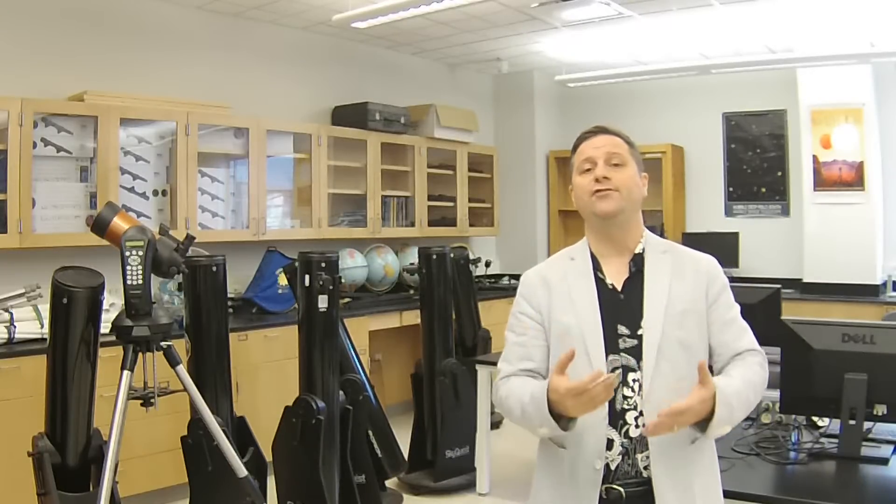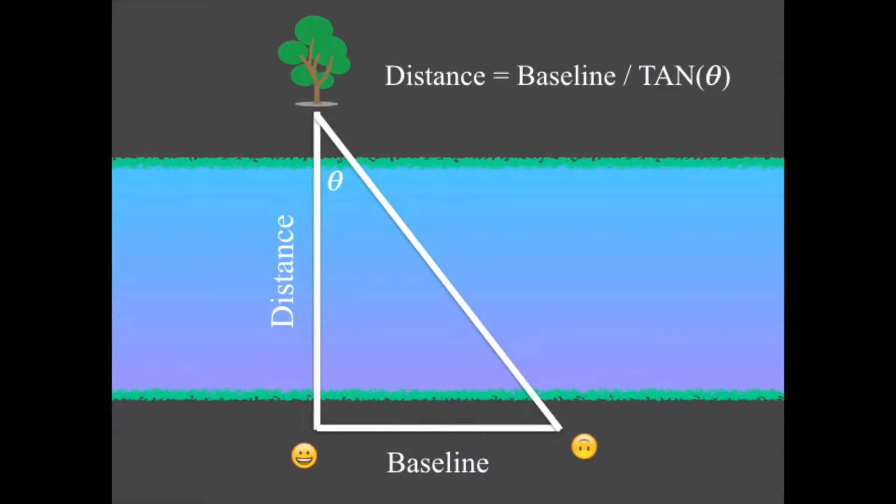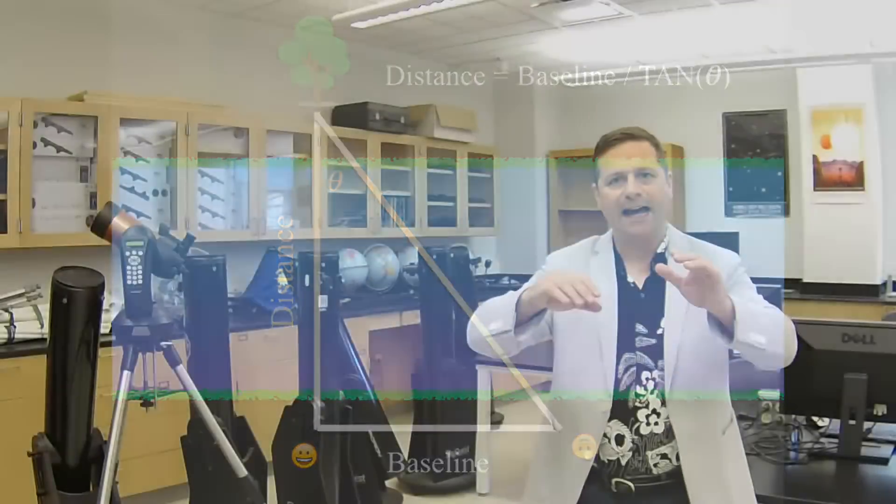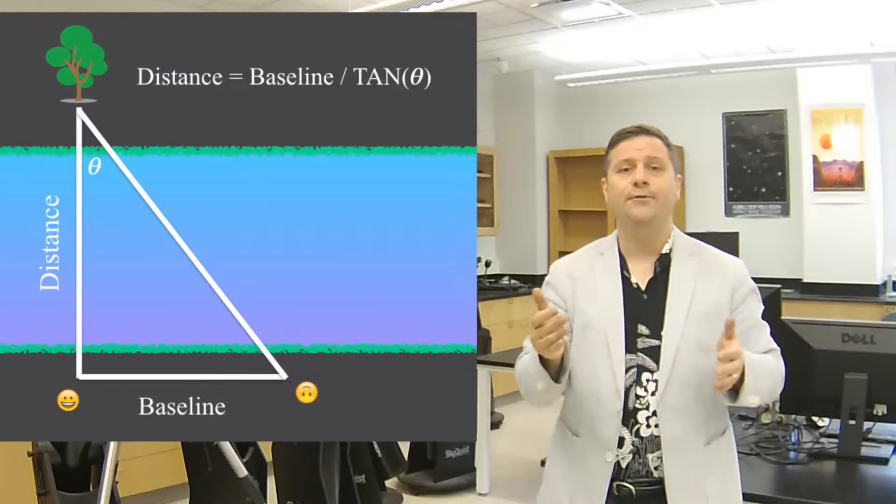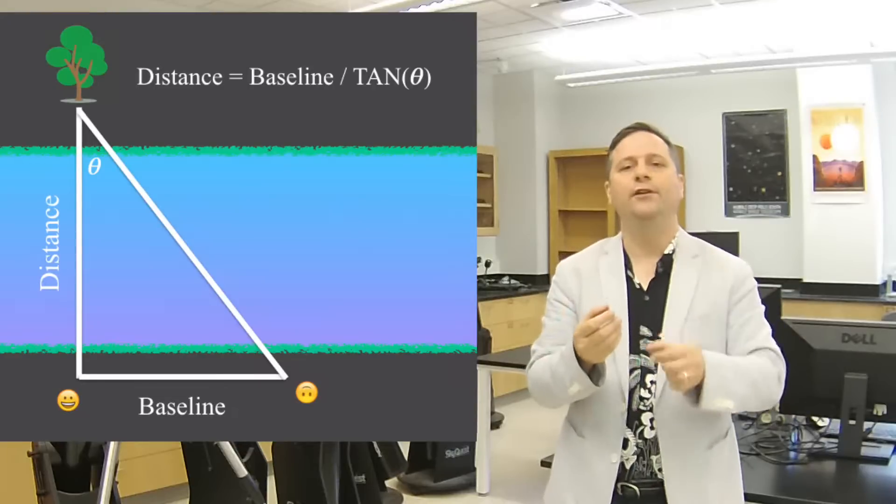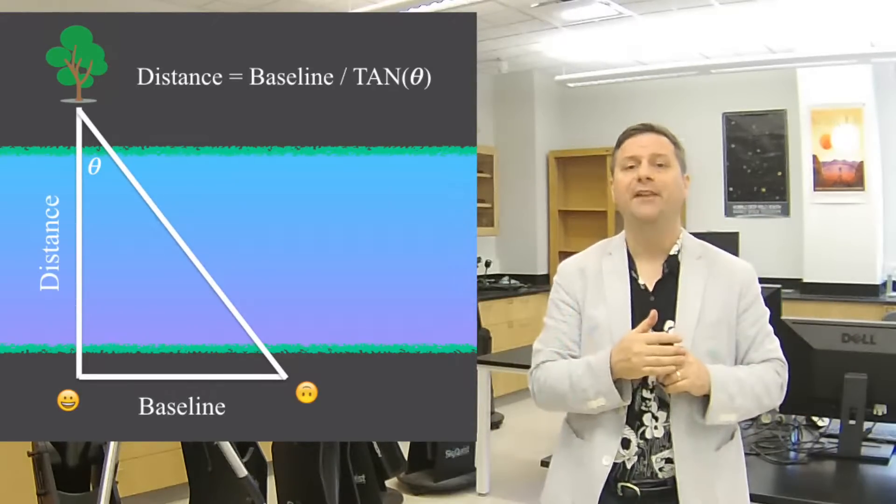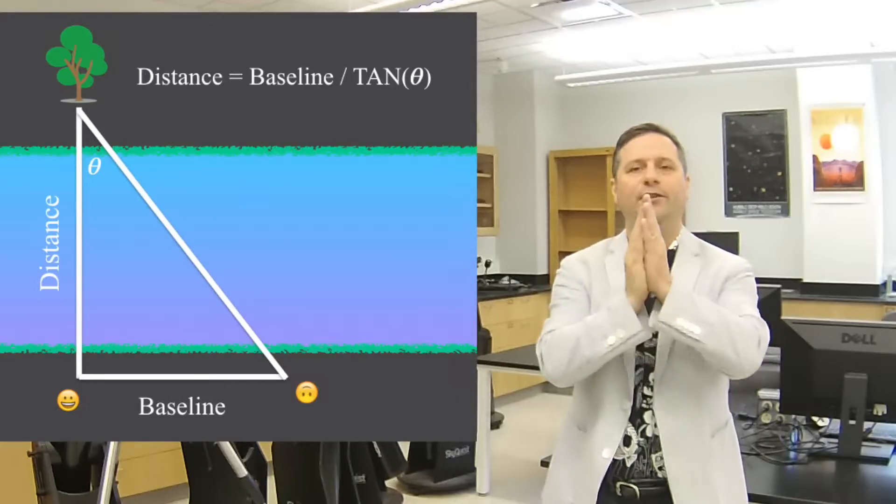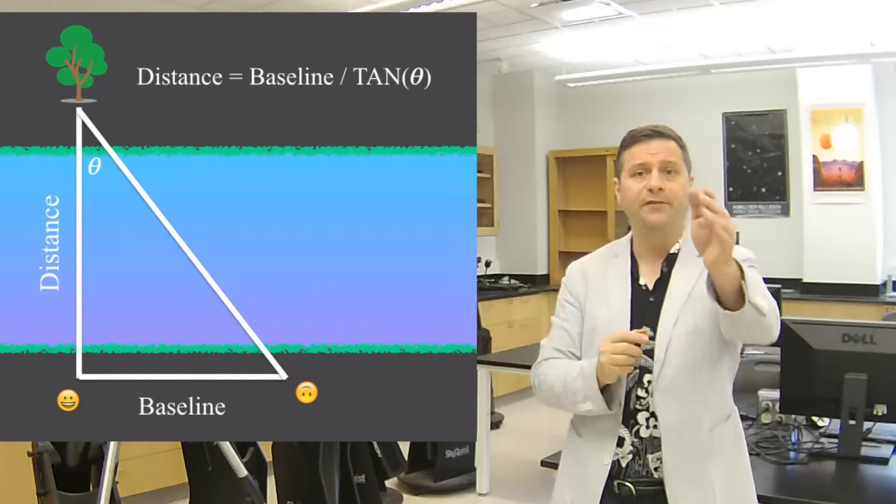Let's pretend that we're trying to measure the distance across a river. We're on one side and there's some significant tree on the other side. We look straight across the river so that it's 90 degrees to the shoreline. We want to measure the distance from our starting point to the tree across the river.